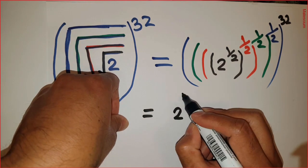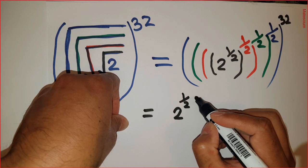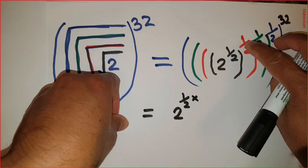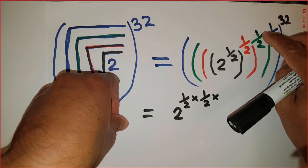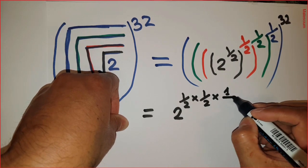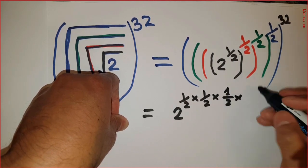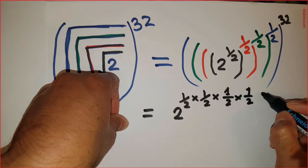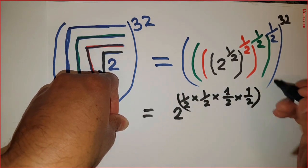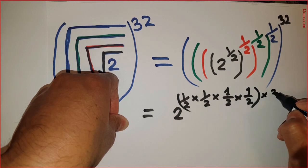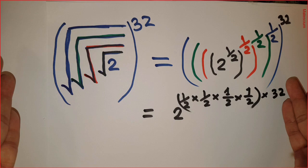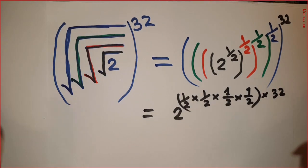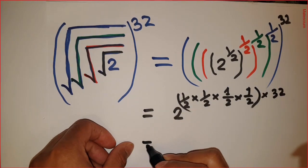2 to the power of half, which is multiplied by this power half, which is multiplied by this power of half, and the whole part is multiplied by 32. This is the simplified version of this one. I did not skip any ground rules. There are no tricks, nothing.